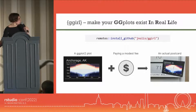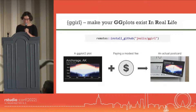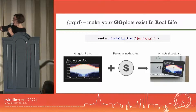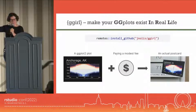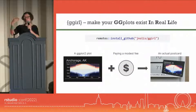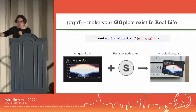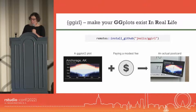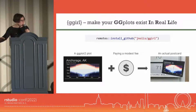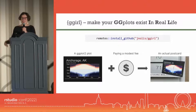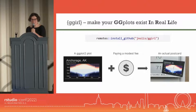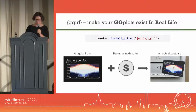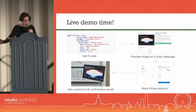Some people may pronounce it G-girl, but it is officially GGIRL. You can install it via remotes, install GitHub, J-Nolis, GGIRL. What it does is you take a ggplot you've made that's beautiful and you wish existed in the physical realm. You can then pay a modest fee, and very soon you will get an actual postcard delivered to a friend or family member. But it's all cool to talk about it — let's actually see how it works instead.